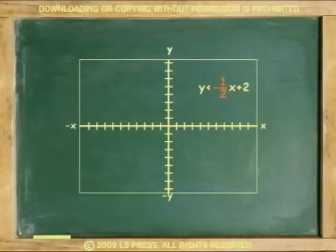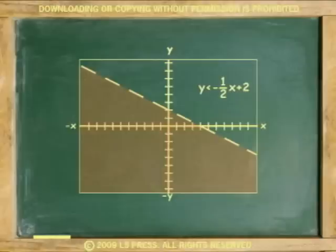We plot it starting at positive 2, from 2, down 1, to the right 2, and the solution is below the line, and the line is dashed because it is less than.